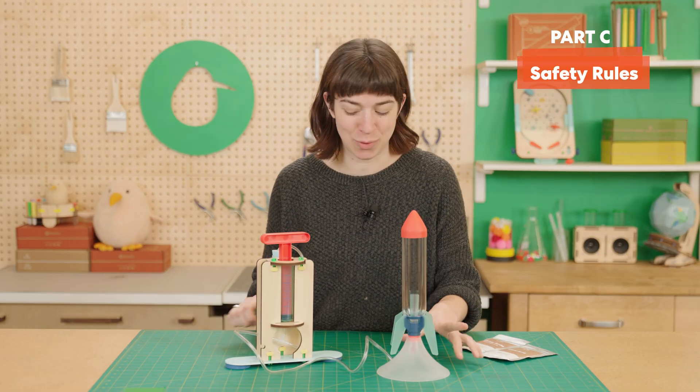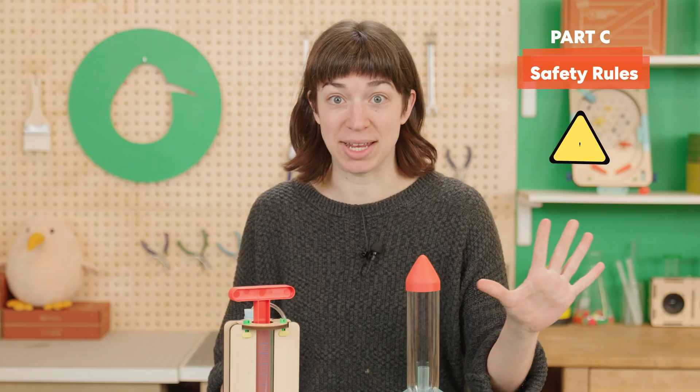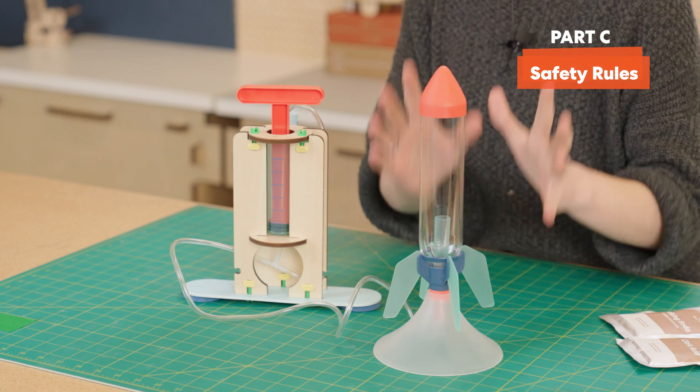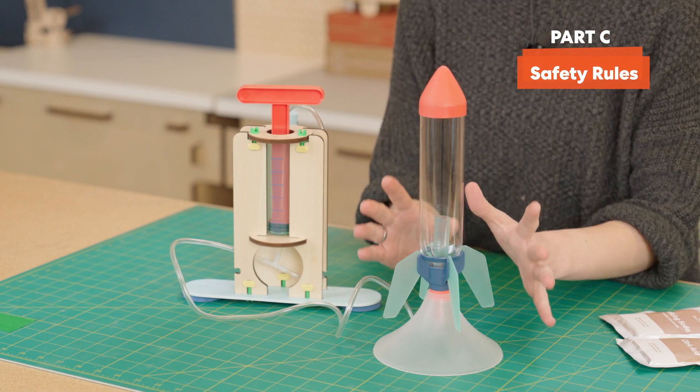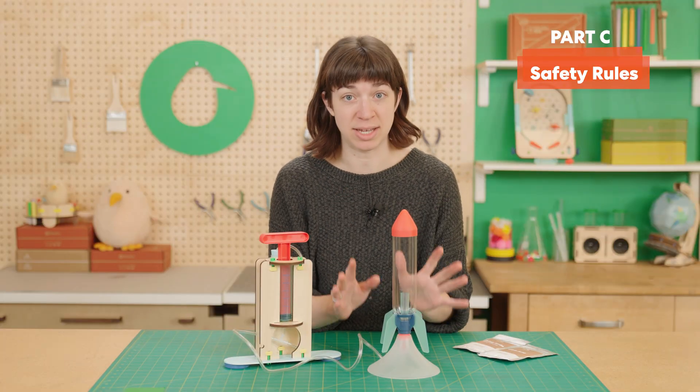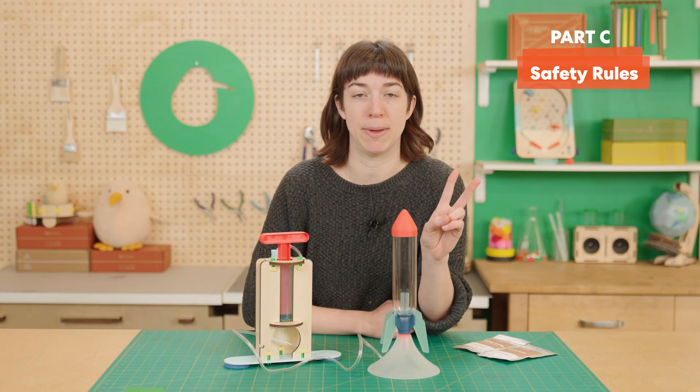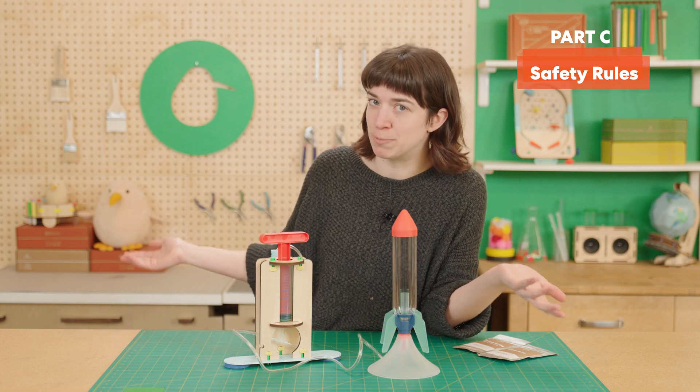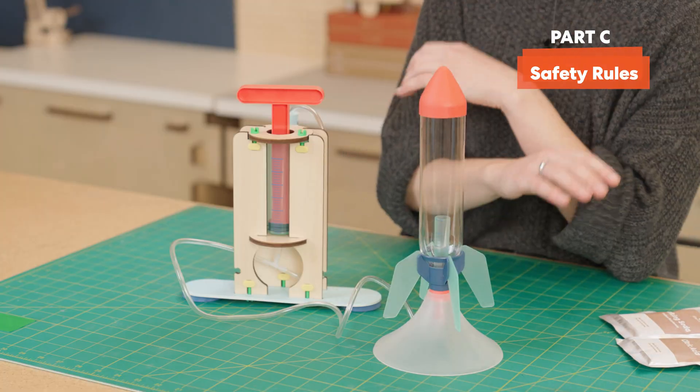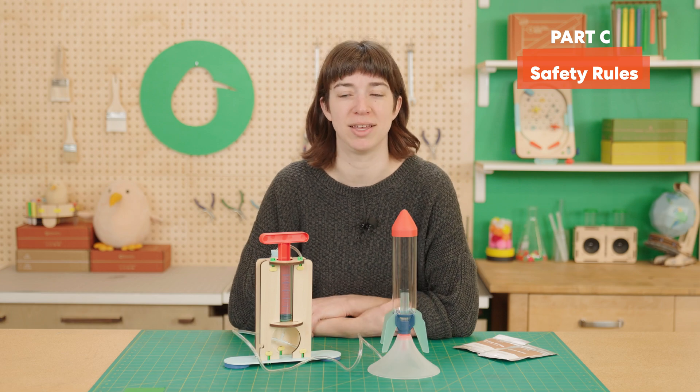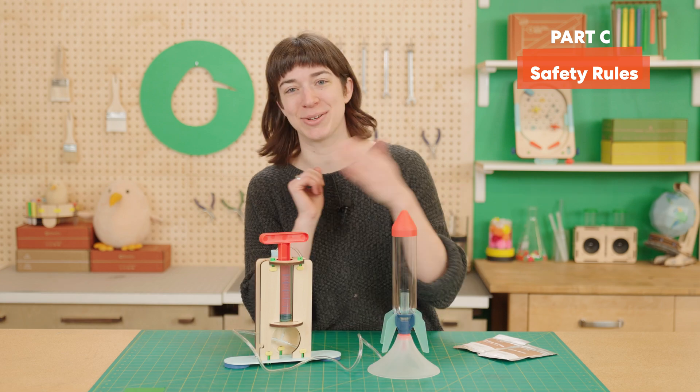Alright, so we've finished building and we're ready to get launching. But wait! Before we go outside, there's two really important things we need to remember for safety. The first is that you should always assume the rocket is pressurized. It can be pressurized from air or from chemical reactions. So even if it's not blowing just yet, wait and see. The second thing to remember is that you should never point it anywhere besides up. Again, we're assuming it's always pressurized, so you never want to put your face over the rocket or point it anywhere like at an enemy or a friend or a duck or anything like that. So now that we've covered those safety rules, let's go outside.